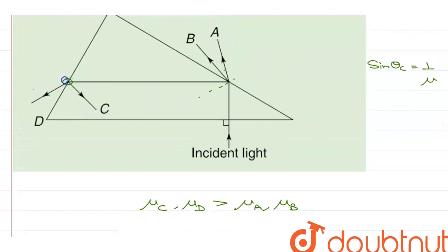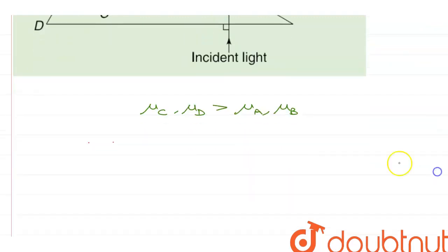Similarly, at this junction, C is getting reflected for a smaller angle of incidence than D which means mu of C is greater than mu of D, which is greater than mu of A, mu of B.